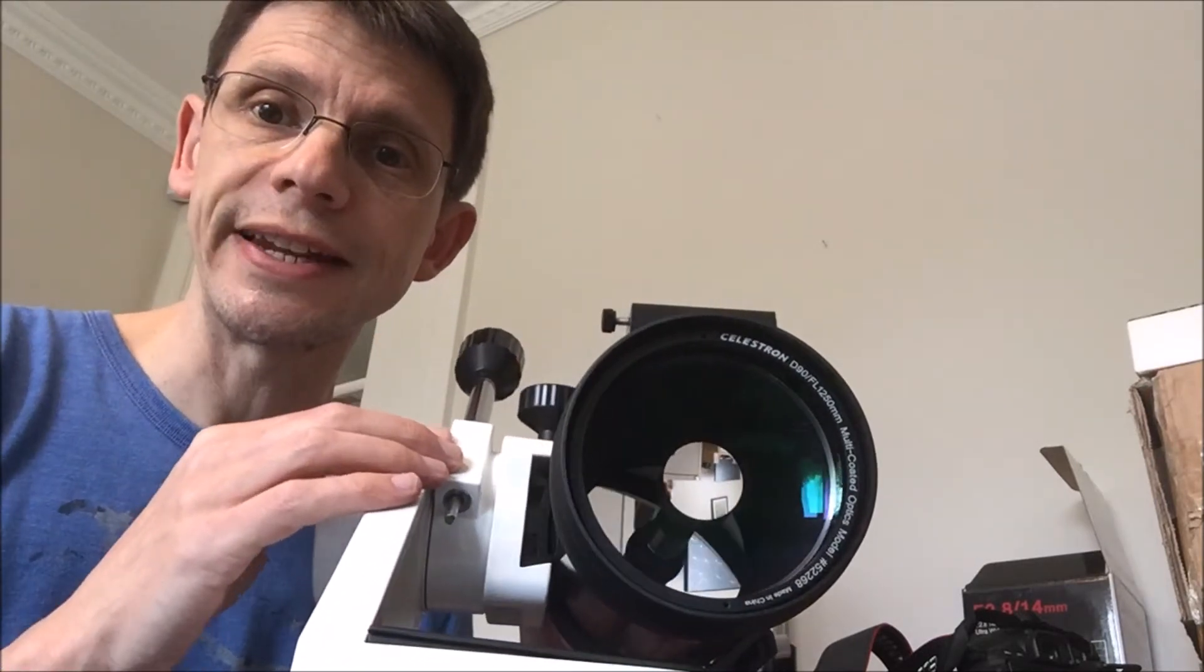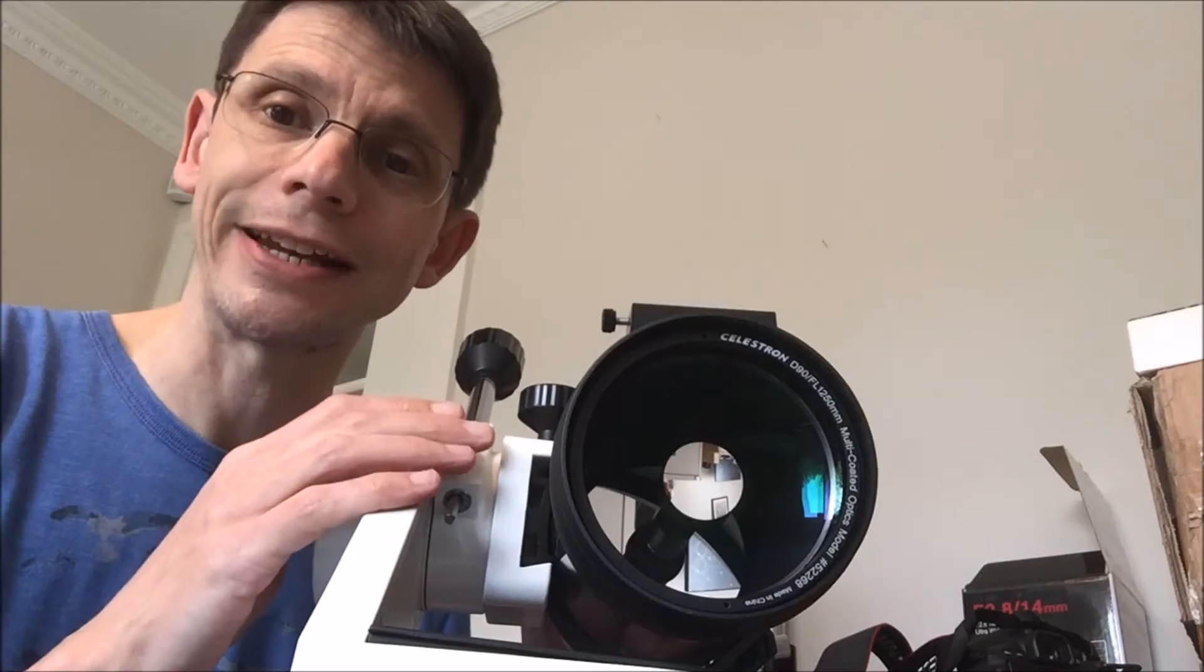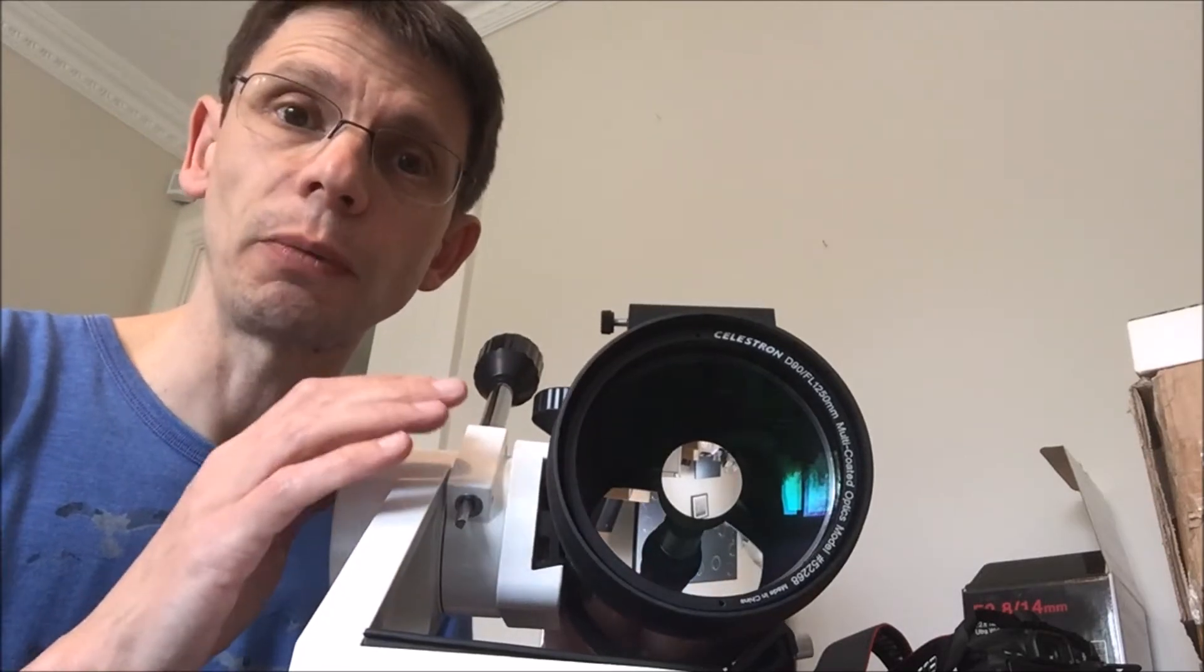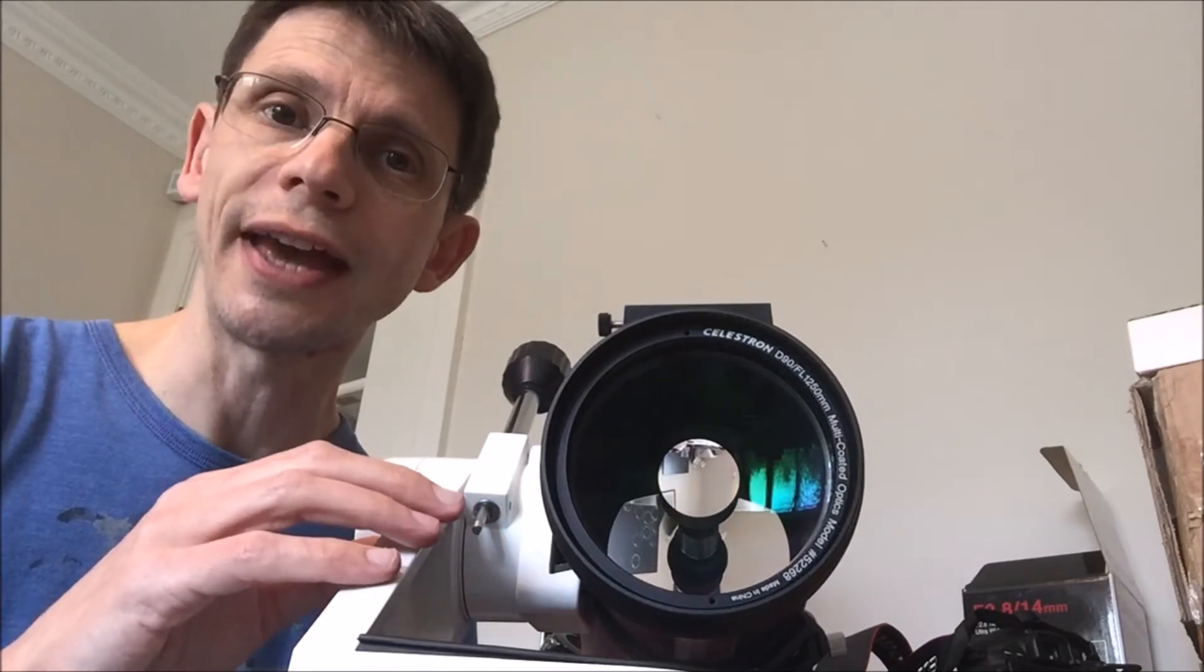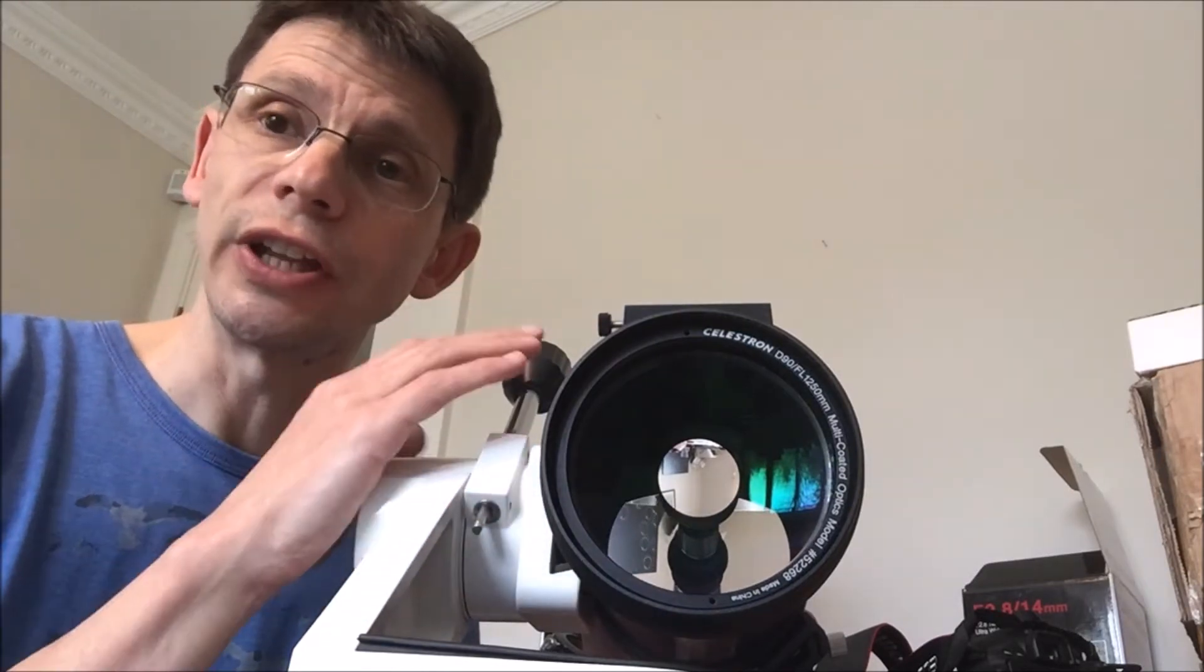Now, if I move the scope, you should be able to see a black plastic tube. That is the primary baffle tube and the purpose of that tube is to make sure that we don't get any stray light reaching the eyepiece and affecting the image.